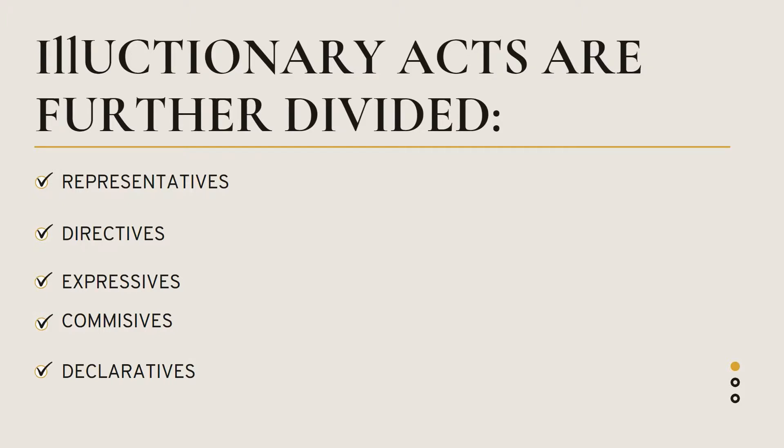The fourth type is commissives. Commissives are when the speaker commits to a future action. Commissives include promises and threats. For example, 'I'll help you' or 'I promise you' — these are examples of commissives, in which you commit to some future action.